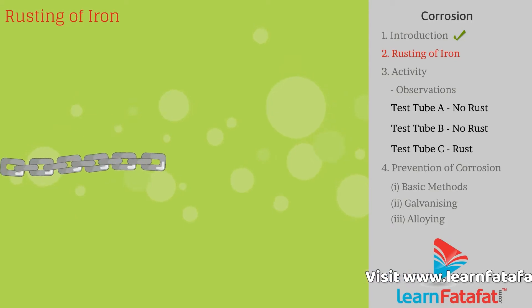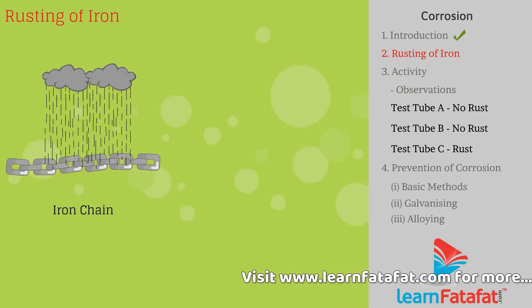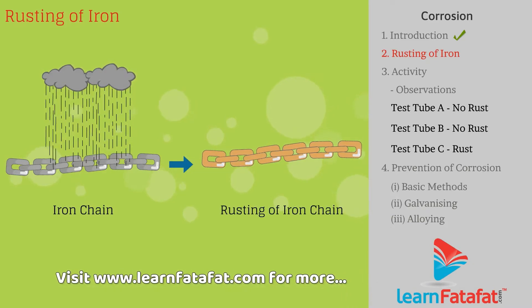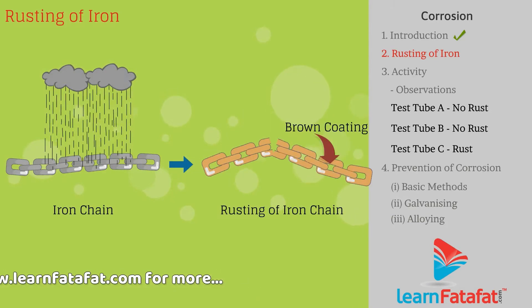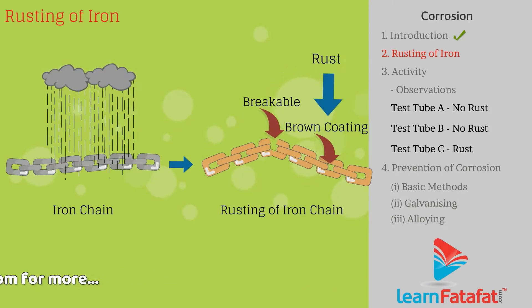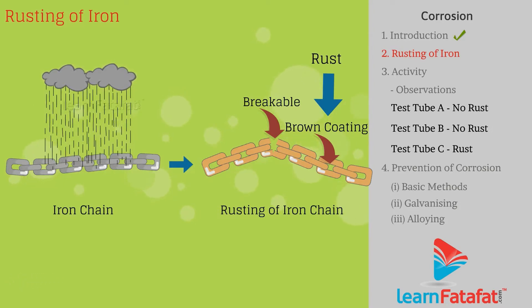Rusting of iron. Iron, when exposed to moist air, undergoes corrosion, forming a layer of brown, easily breakable substance called rust. This process is called rusting of iron.